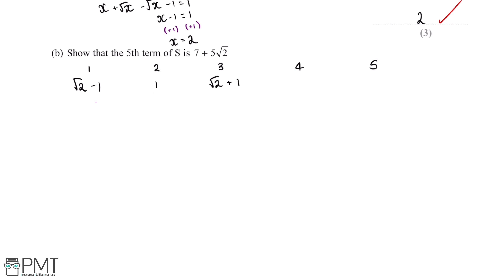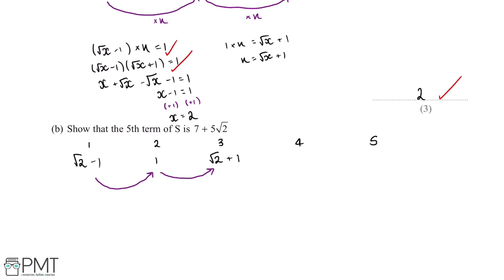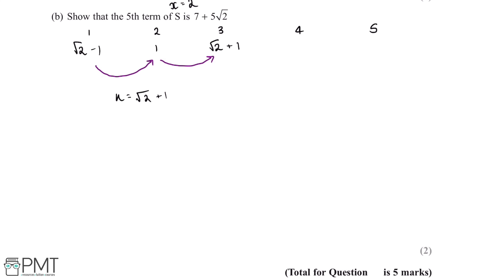To get from one term to the next we multiply by the common ratio k. In part A we found k = √(x+1), and since x = 2, k = √2 + 1. This means √2 − 1 multiplied by √2 + 1 gives 1, and 1 multiplied by √2 + 1 gives term 3. So term 4 = 1 × (√2 + 1) = √2 + 1.